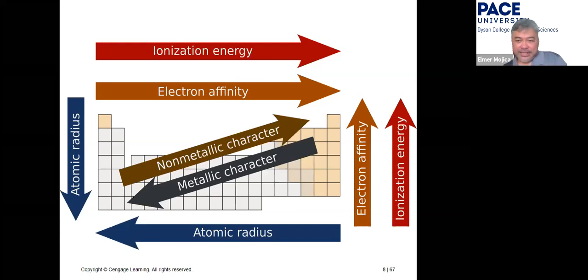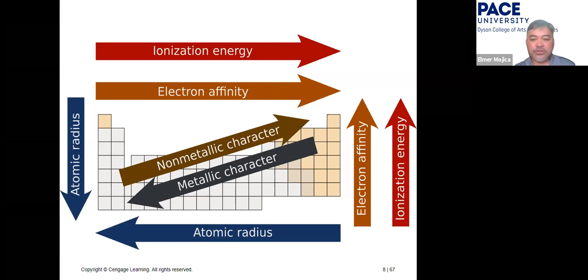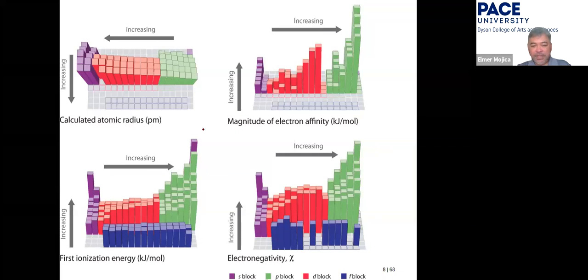To summarize the periodic trends: ionization energy and electron affinity — left to right increases, top to bottom decreases. Atomic radius — left to right decreases, top to bottom increases. Metallic property — decreases left to right, increases top to bottom. Non-metallic property — increases left to right, decreases top to bottom. Electronegativity will be covered in chapter nine.